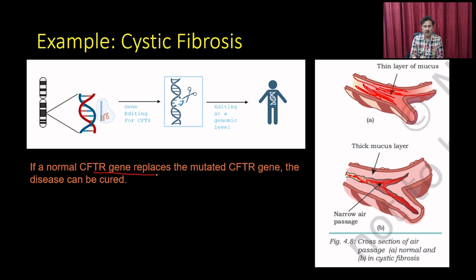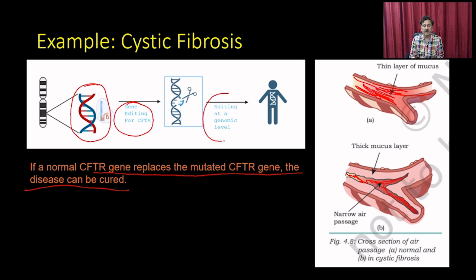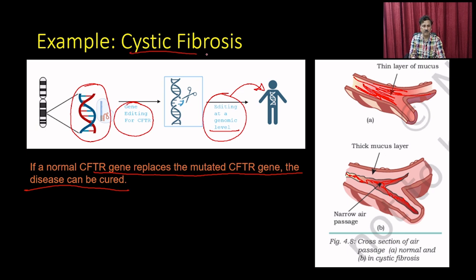In cystic fibrosis, a normal CFTR gene can replace the mutated gene to cure the disease. You take the normal CFTR gene and perform genome editing using CRISPR-Cas9 or similar genome editing techniques, then put it back into the individual to cure the person from cystic fibrosis.